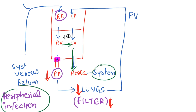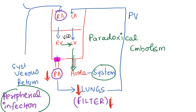So a peripheral infection is carried across the heart chambers into the aorta, then entering the systemic circulation — including the CNS, kidneys, and other systems. This is what we call paradoxical embolism: something originating from the venous system entering into the arterial or systemic circulation. Because it involves infection, it is also called septic embolism. When this septic embolism involves the central nervous system, it results in abscess.